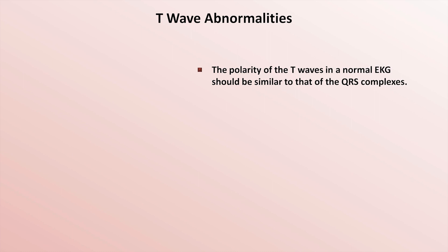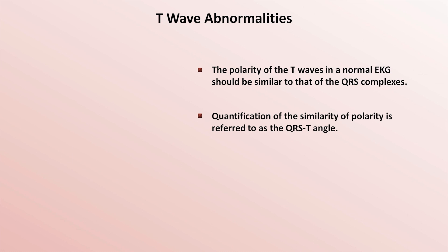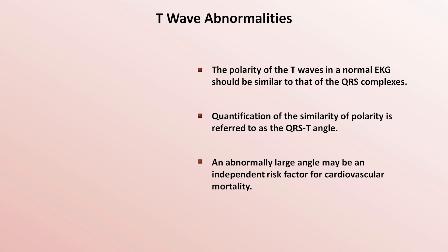With T-waves, their polarity in a normal EKG should be similar to that of the QRS complexes. Quantification of the similarity of polarity is referred to as the QRS-T angle. When evaluating only the six frontal EKG leads, the QRS-T angle is simply the difference between the QRS axis and the T-wave axis, which can either be taken from the computer's calculation or estimated using a similar technique to that used for estimating the QRS axis. An abnormally large angle may be an independent risk factor for cardiovascular mortality.